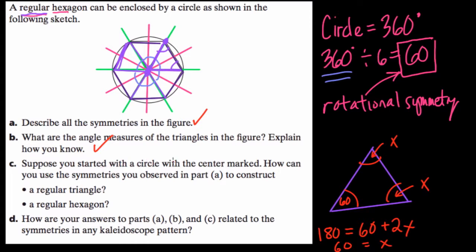Part C, suppose you started with a circle with the center marked. How can you use the symmetries you observed in part A to construct a regular triangle and a regular hexagon? So the middle is about here. The first thing I would do is draw a radius. And I know if I draw these radiuses in both directions to extend them and make diameters, just like I'm doing here, I'll be getting lines of symmetry. And I'll be creating basically the triangles I need. Let me redraw that to create the hexagon. So here I draw one line from here to here, another about here, trying to make them as equal as possible, all crossing through the middle, and here, and now I've created my triangles.